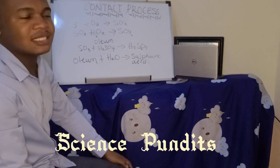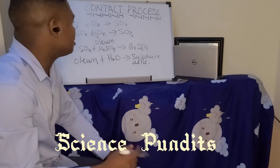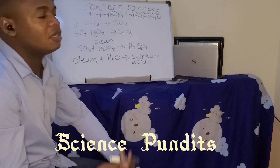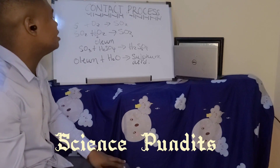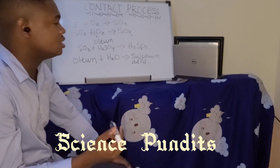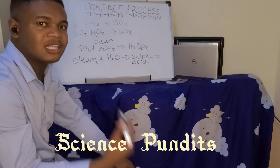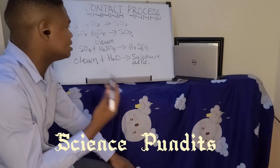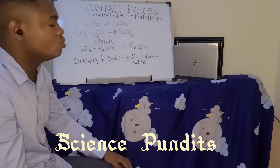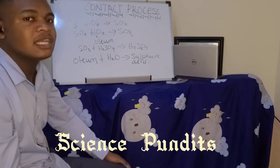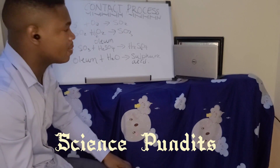Sulfuric acid is a very important acid. It can be used in many chemical reactions, like in organic chemistry where it is used as a condition or a reagent. It is also used in the manufacturing of paint, in the treating of metals, and in making sulfates. It is a very strong acid with a pH of around 1 to 2.